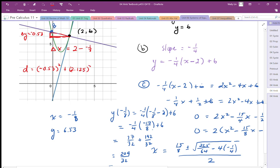So if we work out those two distances, the Pythagoras based on those two distances, it's going to be 0.53 squared plus 2.125 squared.